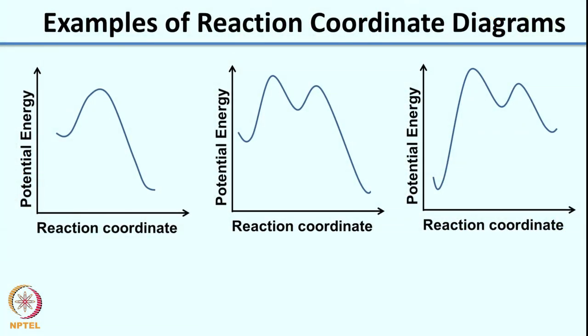So these are some examples of reaction coordinate diagrams, and I would like you to do a small exercise. On your notebooks, draw each of these diagrams so that they look exactly as seen on your screen — you can pause this video. Now, assuming you have drawn these reaction coordinate diagrams, I would like you to label the reactant as R, the product as P, and the intermediates as I in each of these diagrams. You can again press the pause button and do this exercise. Hopefully by now you have labeled them, and your labels should look something like this.